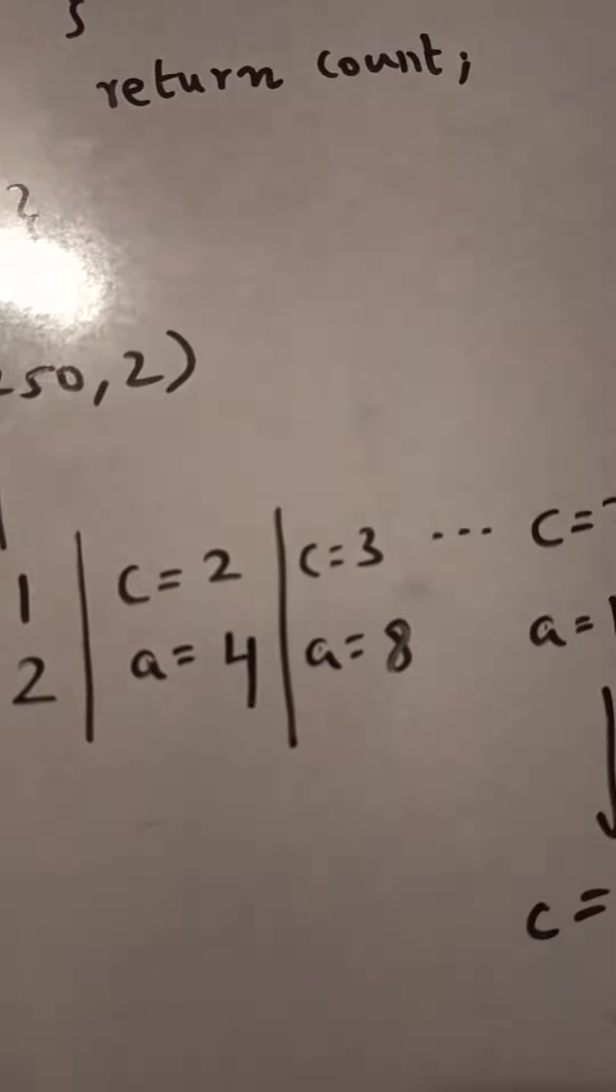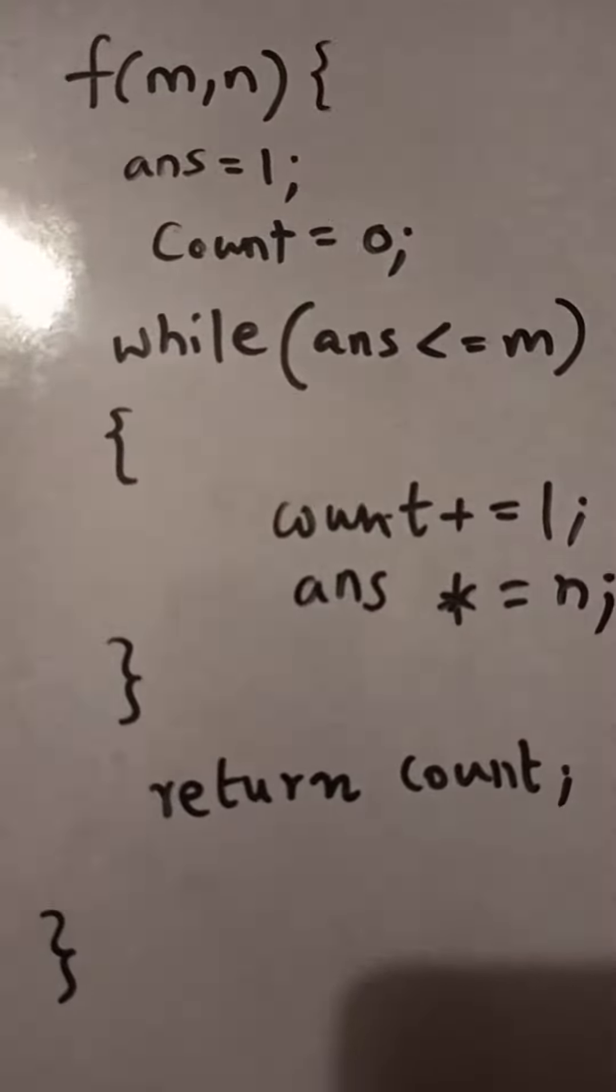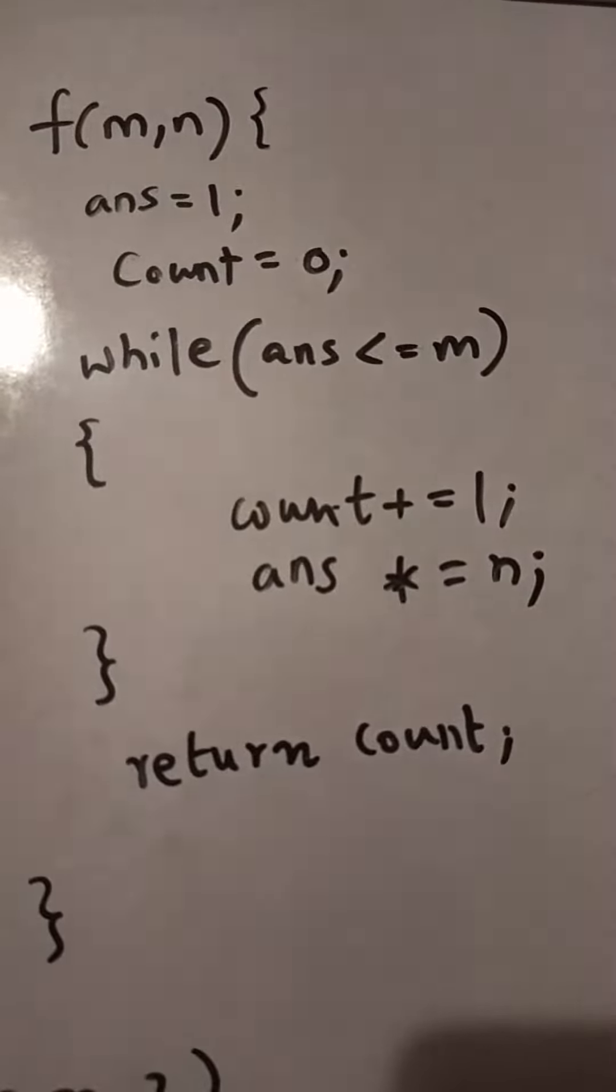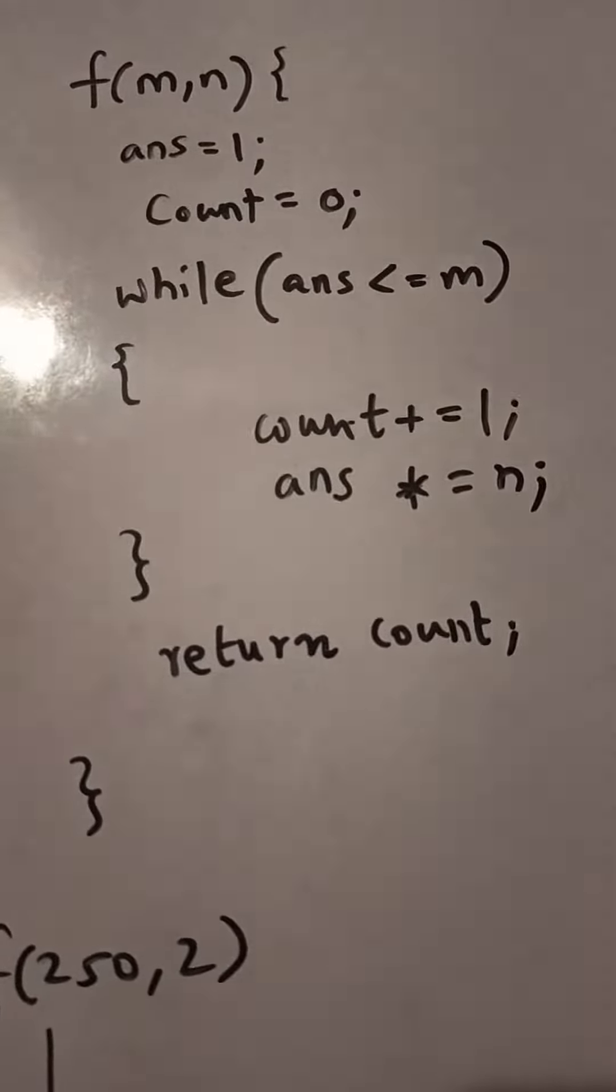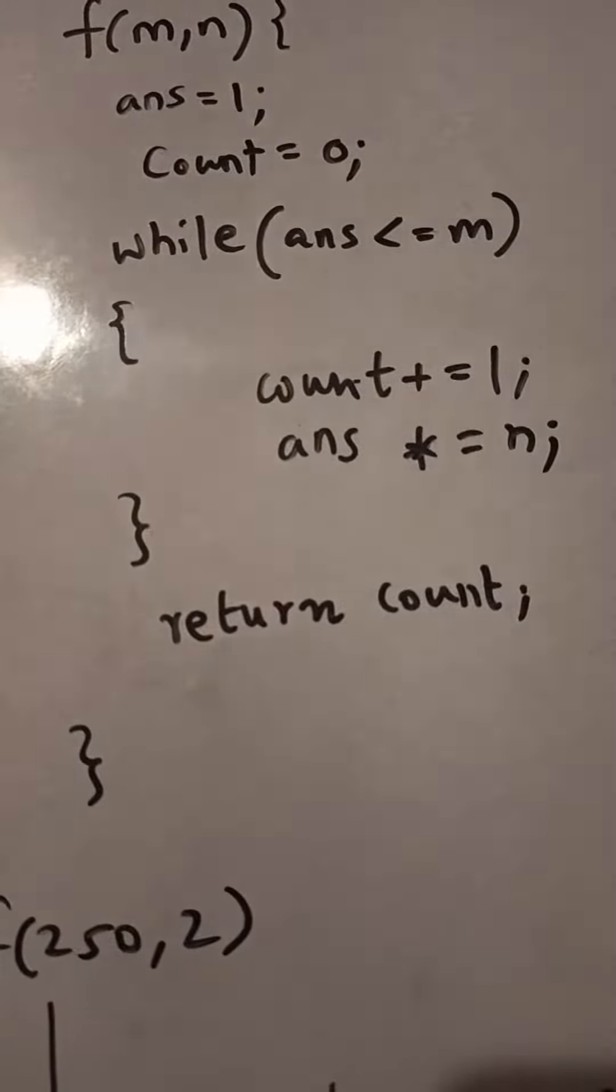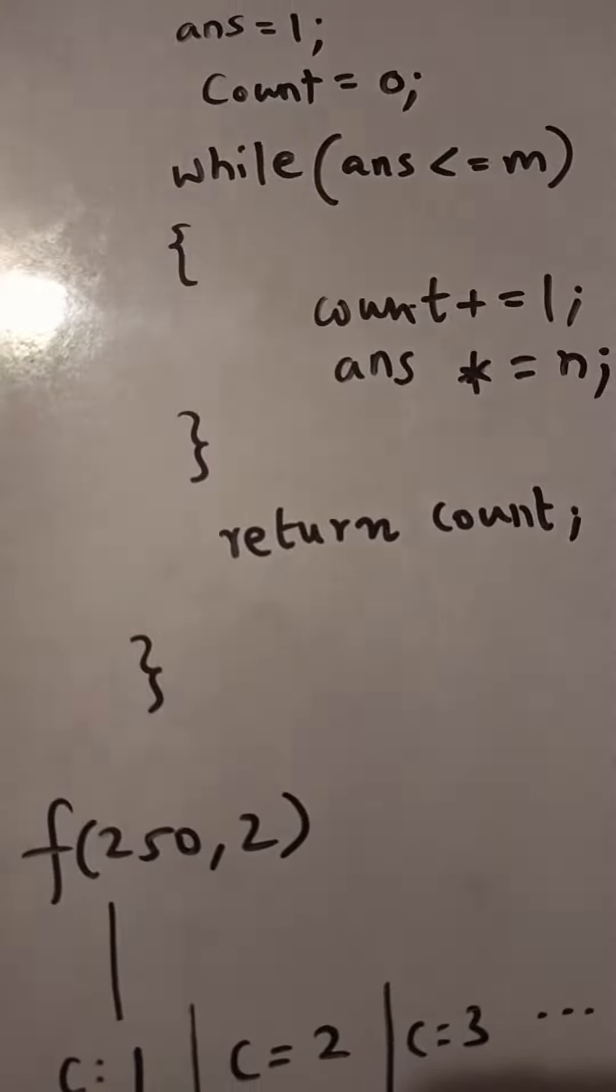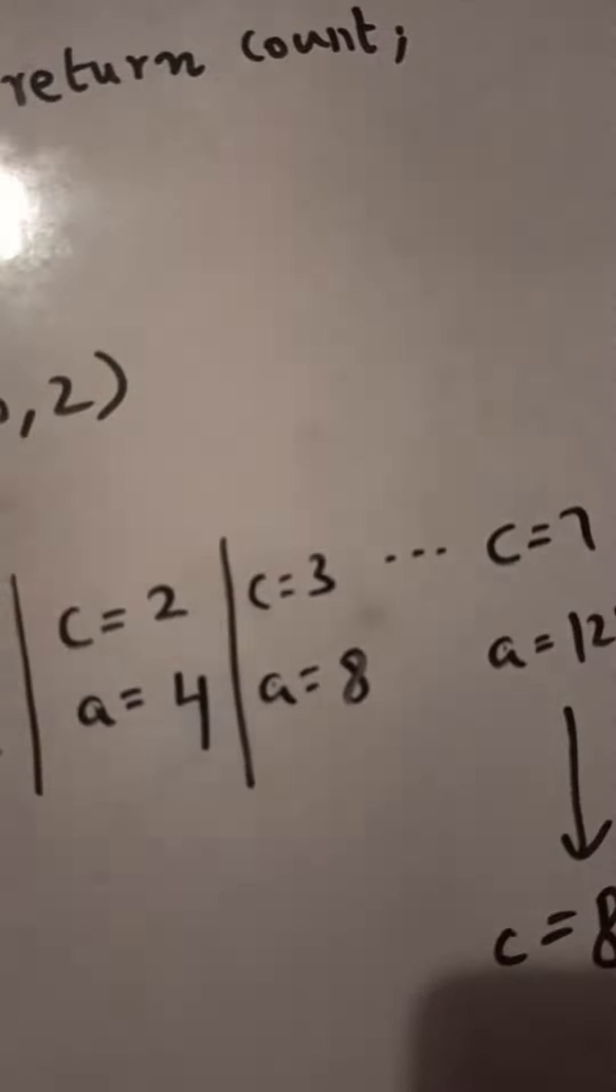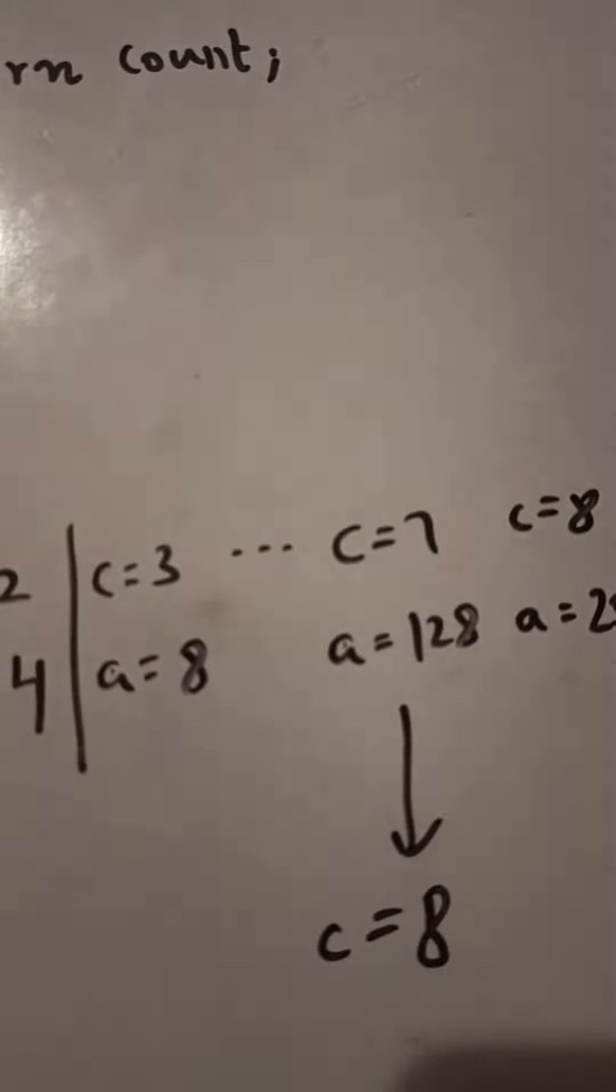A smart move is to figure out when the while loop will run until ans is less than 250. What is the power of 2 which is less than 250? It is 128. So skip the intermediate steps and directly reach c equals 7, a equals 128.